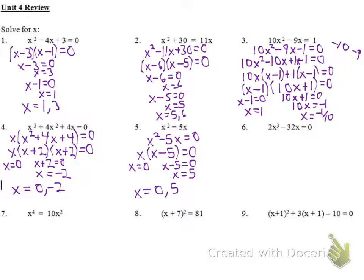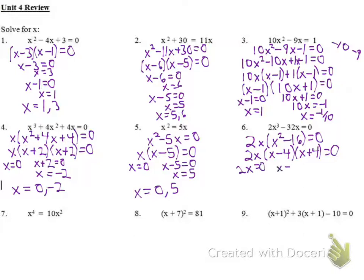Number six, I factor out what I have in common — a 2x — leaving me with x squared minus 16 equals 0. x squared minus 16 is a difference of two squares, so that becomes x minus 4, x plus 4. So I have 2x equals 0, x minus 4 equals 0, and x plus 4 equals 0. That gives me solutions of x equals 0, x equals 4, and x equals negative 4 — three solutions for number six.